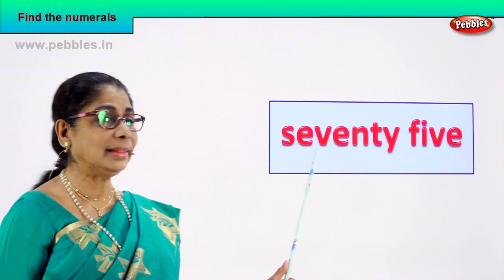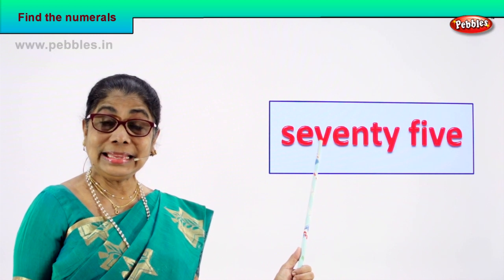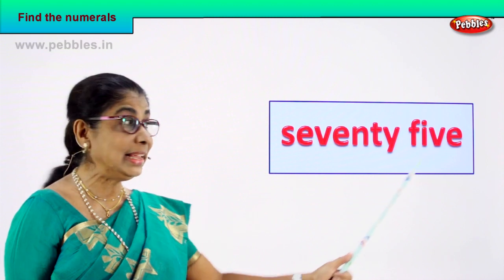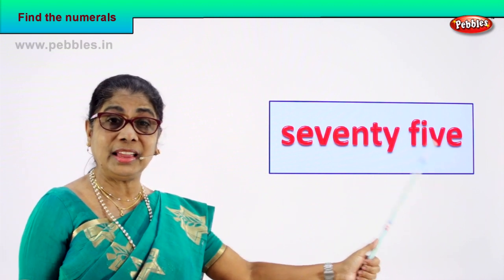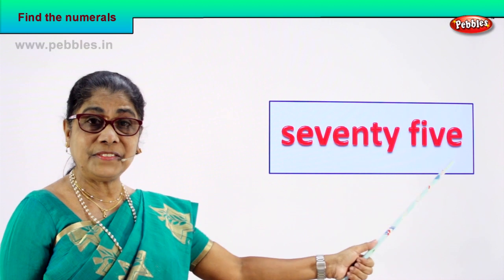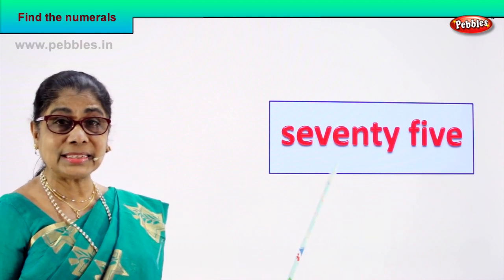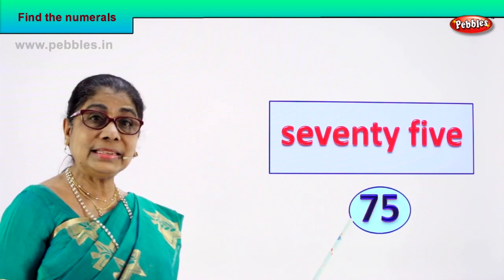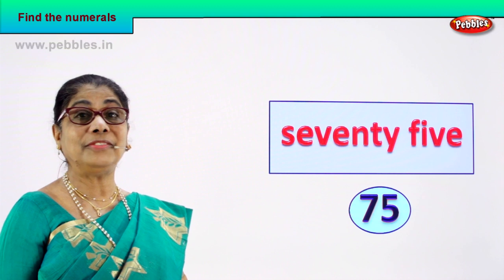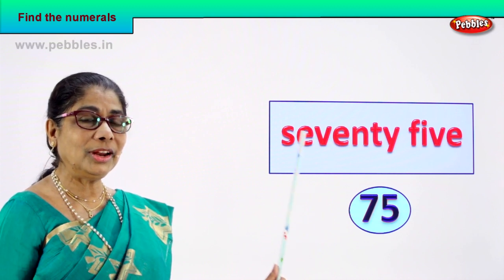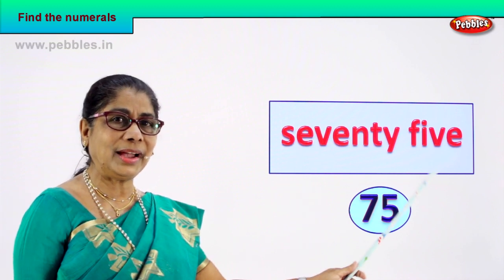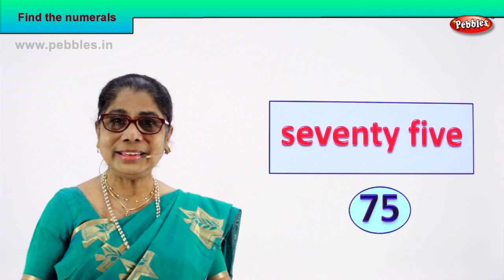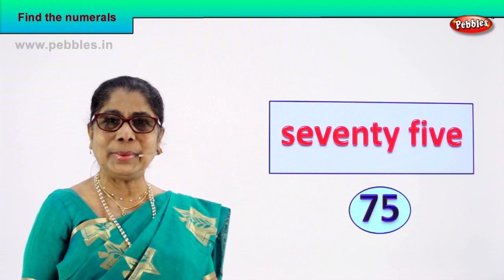Look, let's go together. S-E-V-E-N-T-Y, 70. F-I-V-E, 5. 75. How do we write the numeral? 75 — seven and five. Very good! You learn to read 75 and the numeral is 7 and 5, 75. Did you enjoy the exercise? Shall we take another number name?